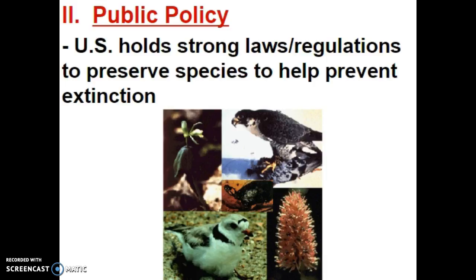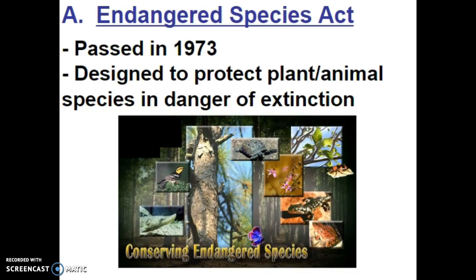Developed countries have the most laws and regulations on wildlife, and the United States holds one of the stronger policies on laws and regulations to help preserve species and prevent extinction. One of those policies is the Endangered Species Act, passed in 1973. This act is designed to protect any organism from becoming extinct.